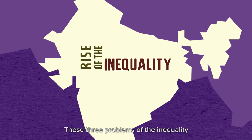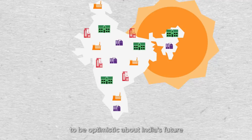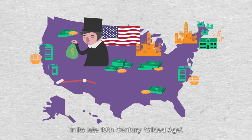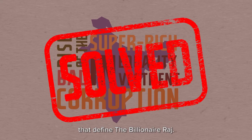Today these three problems — inequality and the super rich, corruption, and investment — form the heart of the billionaire Raj. However, there are plenty of reasons to be optimistic about India's future. Many other countries have gone through similar tumultuous periods, not least America in its late 19th century gilded age. As America did before, so India too can move beyond its own new gilded age — but to do so it needs first to fix the three problems that define the billionaire Raj.